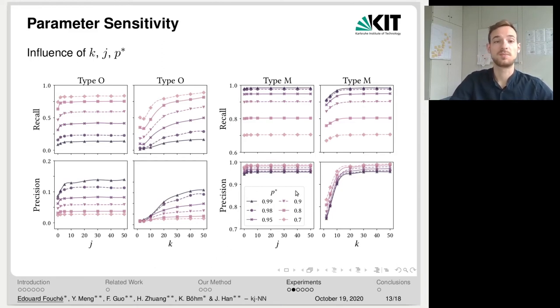Then we can see that P* is a trade-off between type O and type M outliers. For a very high value of P*, 99%, we can see that we have a very low recall for type O outliers, but a very high recall for type M outliers. The other way around, we have very high precision for type O outliers, but a low precision for type M outliers. So setting P* to 0.9 actually leads to relatively high recall and precision for both outlier types. So we set it to this value for the remaining of our experiments.